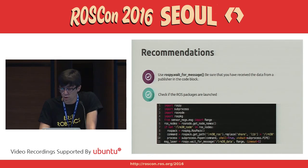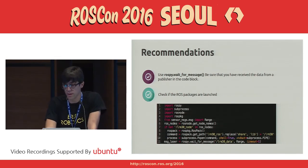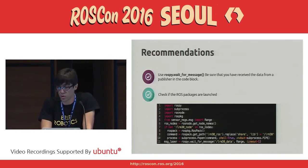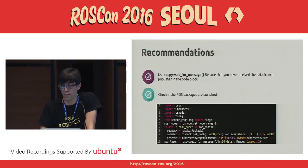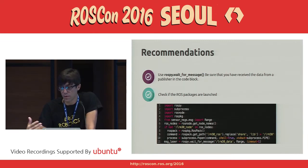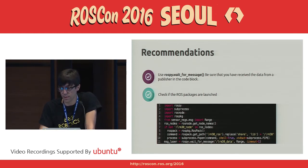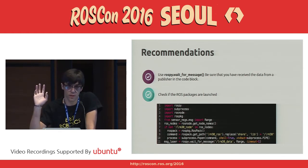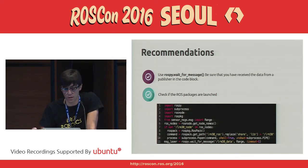I have some recommendations for you. The first one is to use ROSPy wait_for_message, because you have to be sure you are receiving data from a publisher in the code block — if we use callbacks, we are not completely sure that we are receiving data in this code block. Also you have to check that the ROS node is launched and the topics are available, because the user on the frontend doesn't care about ROS internals.